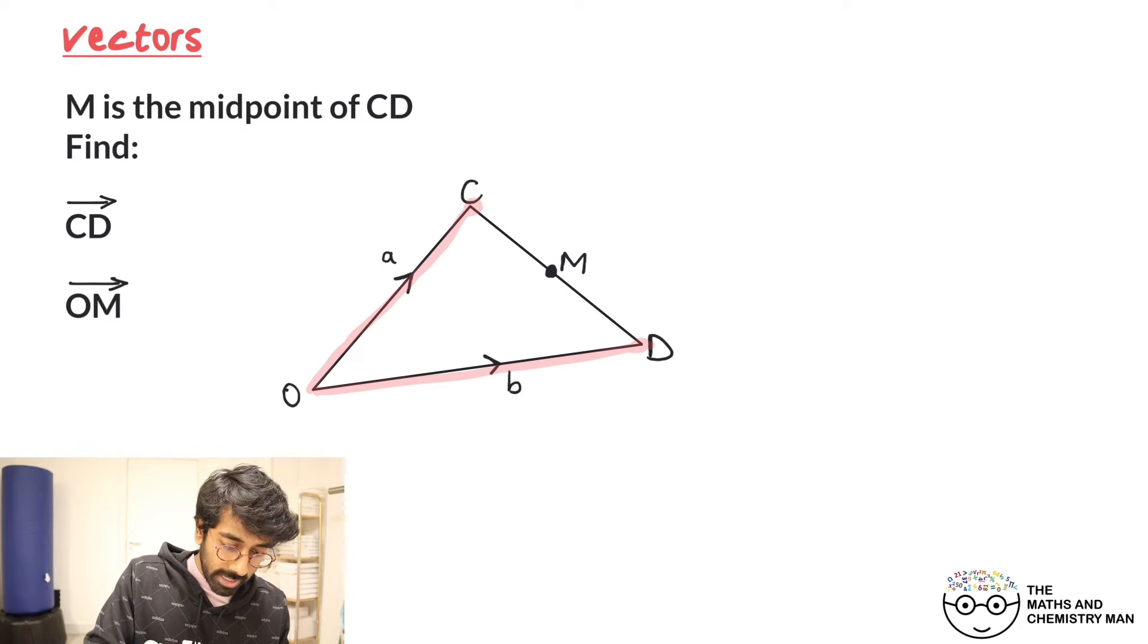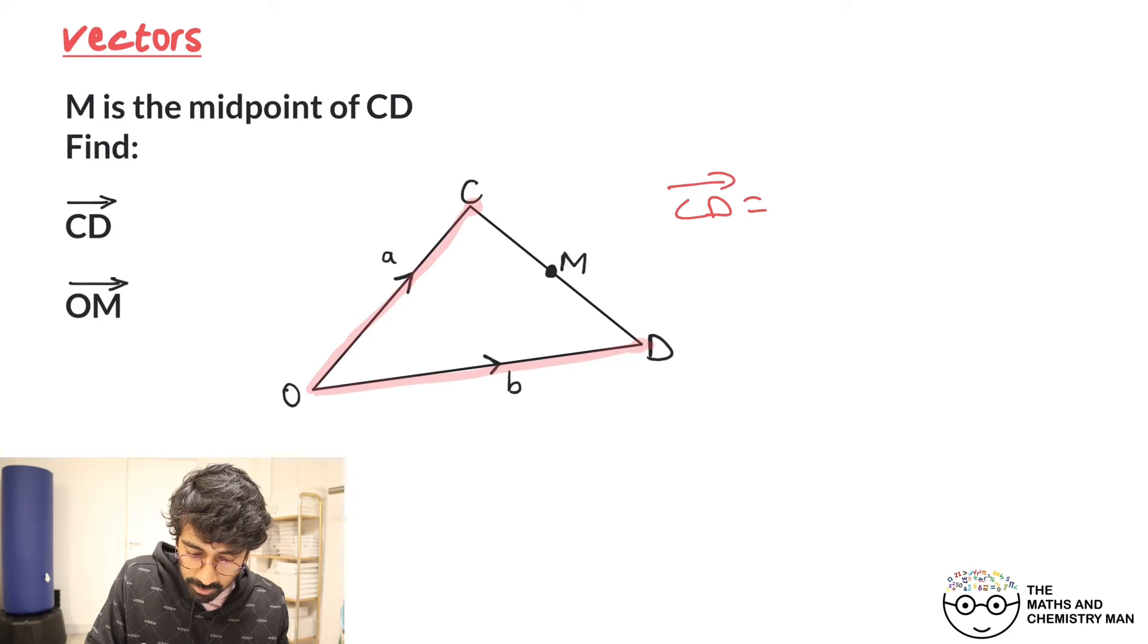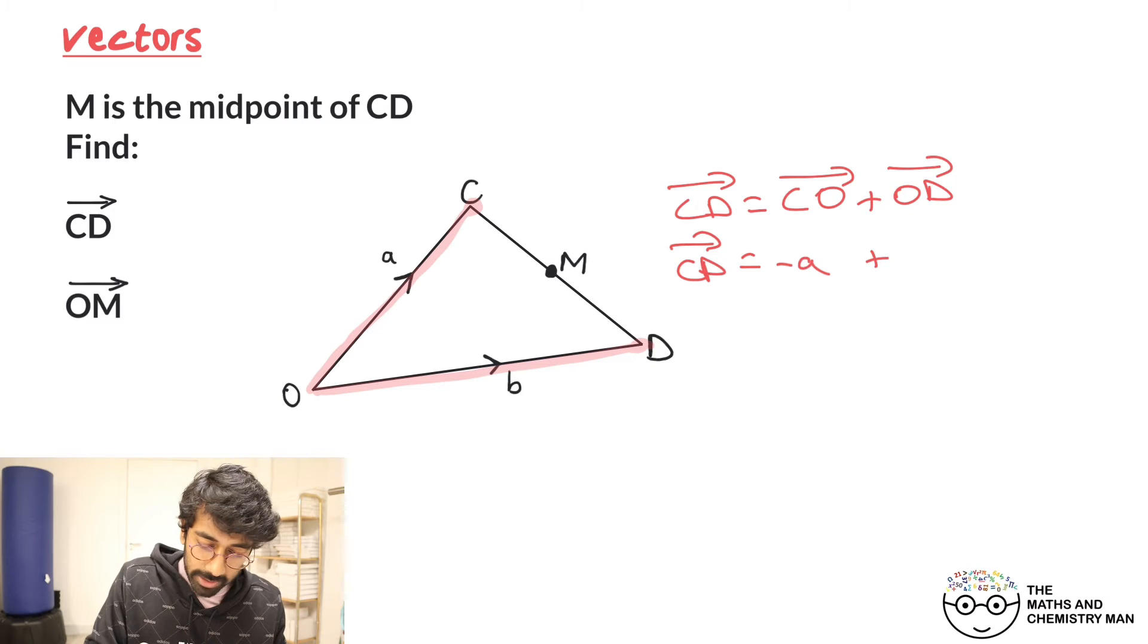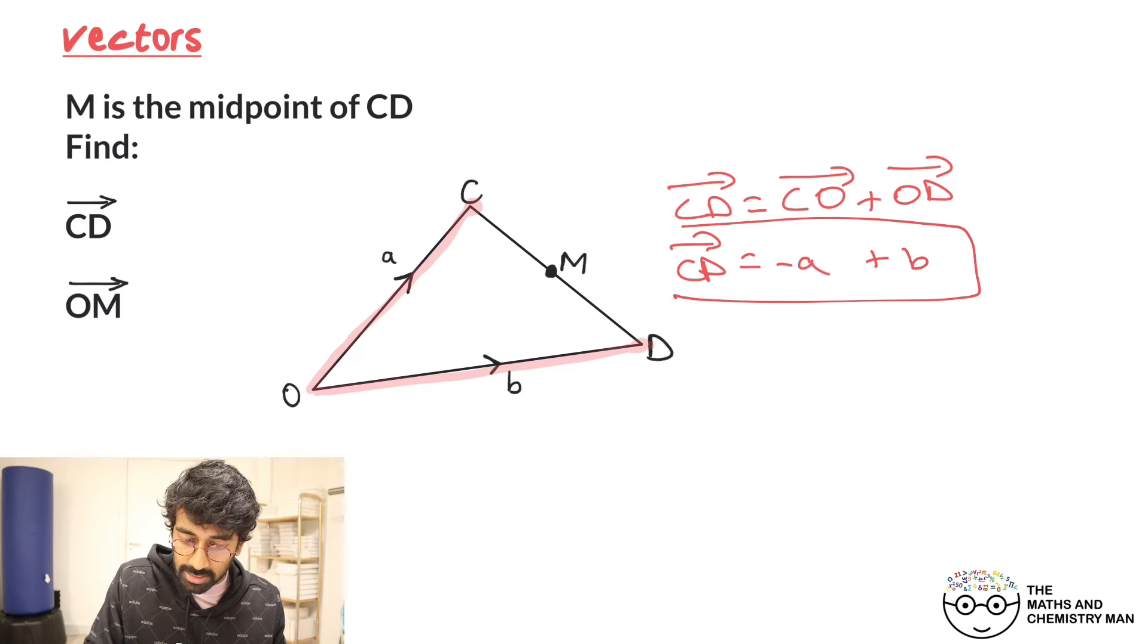So the route I'm taking is from C to D. I'm going from C to O and then adding on O to D. So now CD is equal to C to O. Remember you're going against A there, you're going in the opposite direction, so that's minus A, and then you're going in the same direction as B, so plus B. That's nice and simple to begin with.